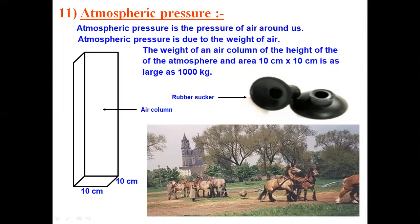Here is a diagram showing another demonstration of atmospheric pressure. Two hollow hemispheres are attached to each other such that a vacuum is created inside. Horses on both sides pull to separate them in a tug-of-war, but the force of the horses is not enough to pull them apart. This shows how strong atmospheric pressure really is. I hope you have understood the concept of atmospheric pressure. Thank you.